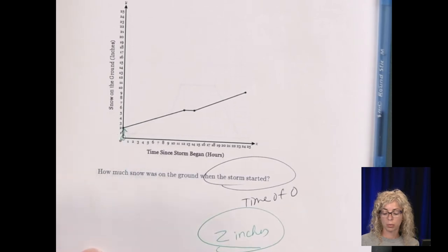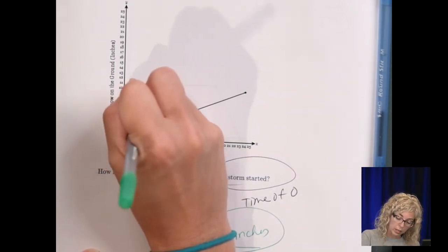So the storm started, that's a time of zero. So I look at where time is zero. And then here. The snow on the ground was already at two inches. So time of zero here. Go up. That's the point. If you look at it, the point is zero, two.